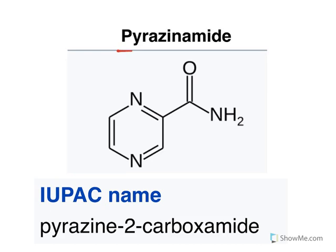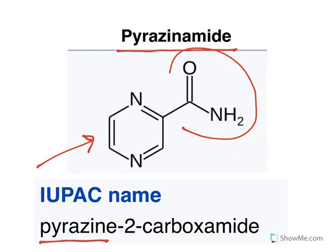Pyrazinamide has a pyrazine ring with an amide linkage. Its IUPAC name is pyrazine-2-carboxamide — at the second position of the pyrazine ring there is a carboxamide group.